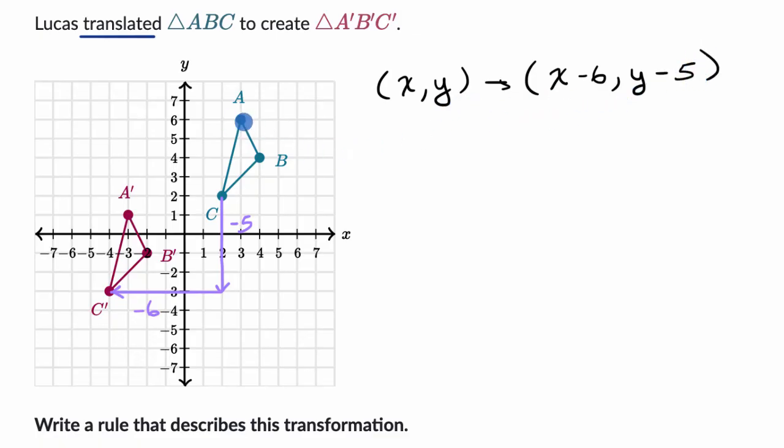We could double check it with one of these other points. For example, we could look at point B. If we go down five, we will end up right over here. And then if we go to the left six, we are going to end up right over there at B prime. So this rule definitely describes this translation.